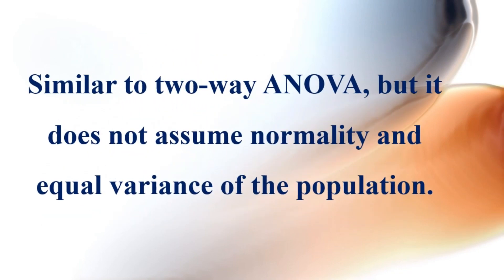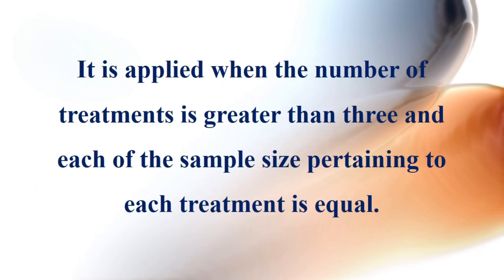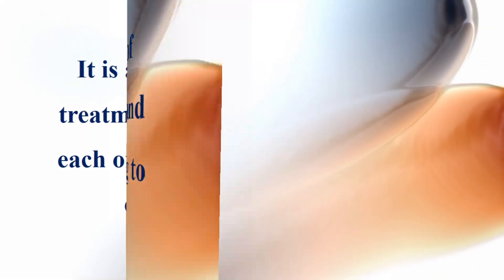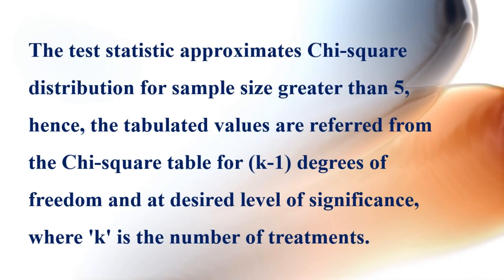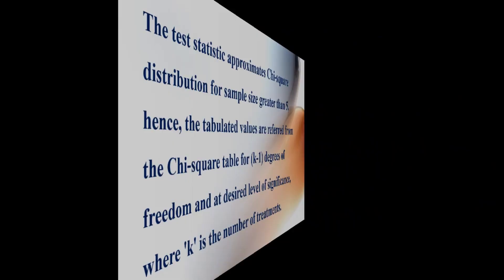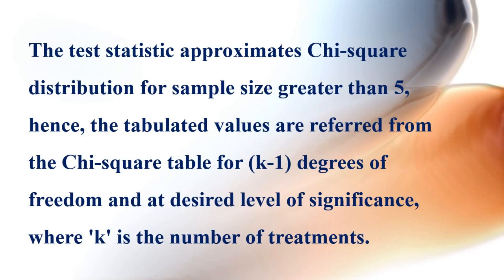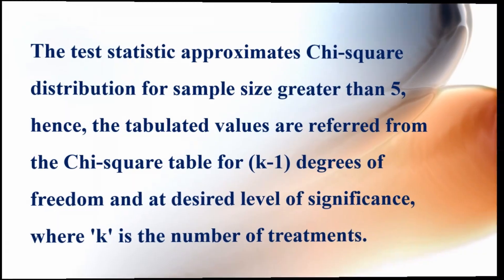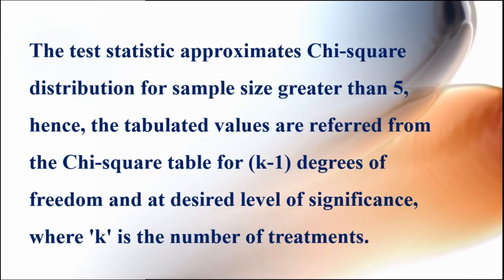Similar to two-way ANOVA, the Friedman test does not assume normality or equal variance of the population. It is applied when the number of treatments is greater than three and each sample size pertaining to each treatment is equal. The test statistic approximates a chi-square distribution for sample sizes greater than five, so tabulated values are referred from the chi-square table for k-1 degrees of freedom at the desired level of significance, where k is the number of treatments.